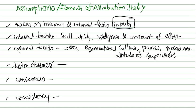Consensus refers to comparison of the behavior of an individual to the behavior of other people under the same situation. Consistency refers to the continuity of behavior over a long period of time — something that is not just situational but how behavior continues over a long period.